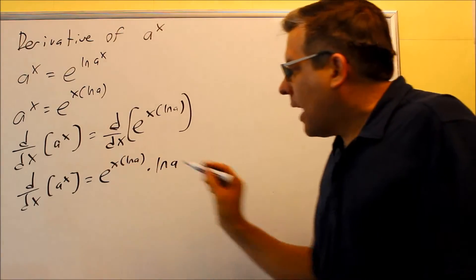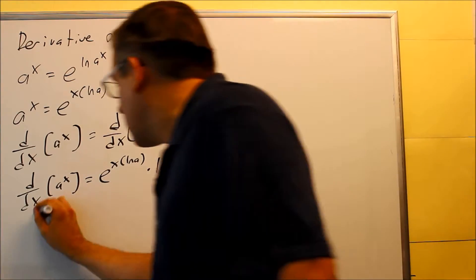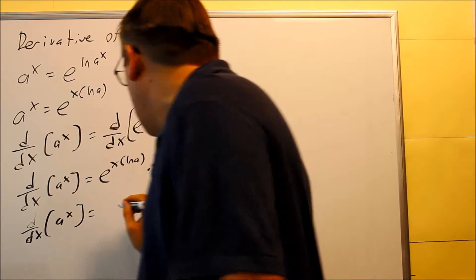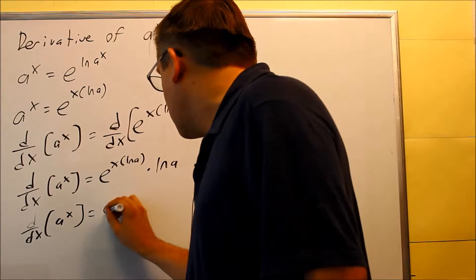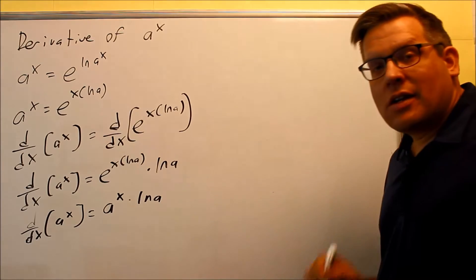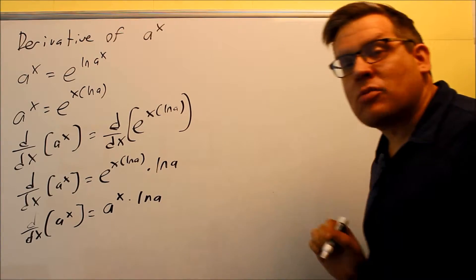This part, I'm just going to go ahead and change it back into a to the x to get it into the more familiar form. And what do we get? We get a to the x and then times ln a. So that is going to be your derivative. The derivative of a to the x is a to the x times ln a.